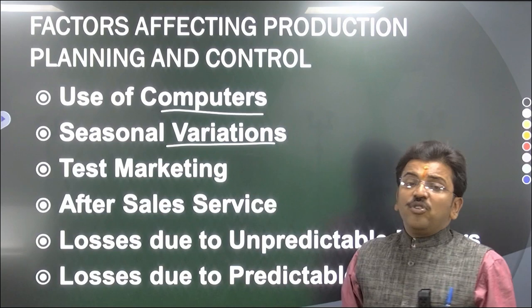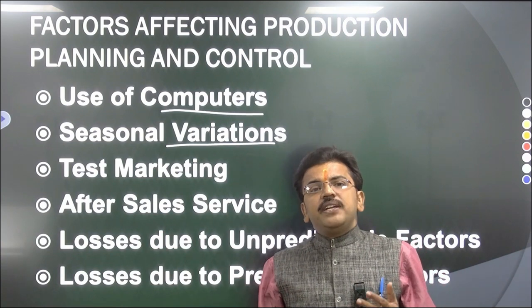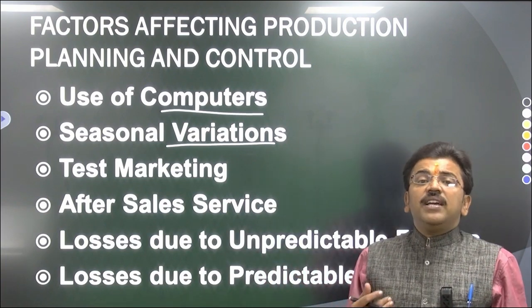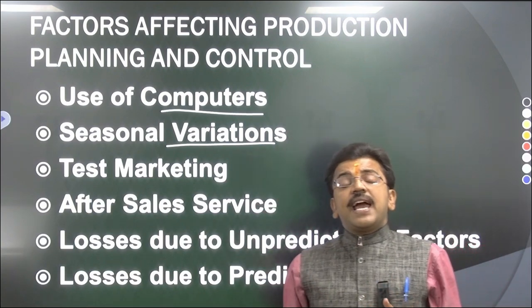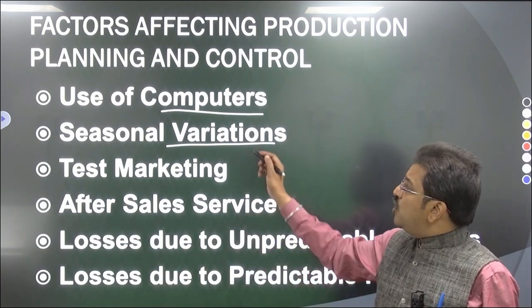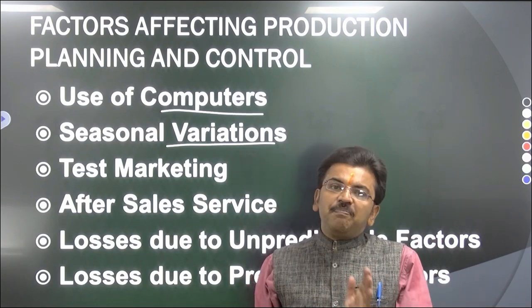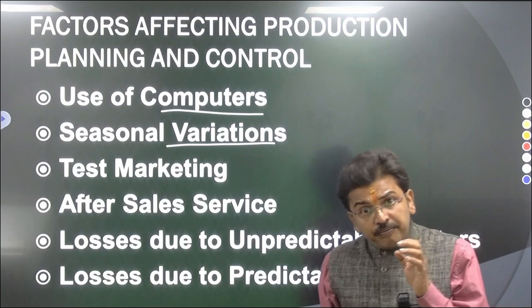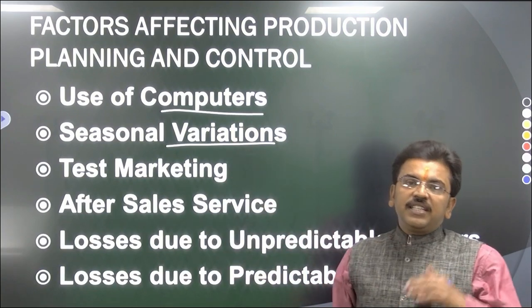Seasonal variations are also a key factor — there are different seasons and raw material has a direct impact on seasons. Some raw material is cheaper in a specific season, while in another season its price increases. By the help of PPC we can decide that in a particular month when raw material is cheaper, we can buy it then. Some products are sold in specific seasons, so you have to work before that season so that the product will be in the market in advance, and seasonal variation can be overcome.